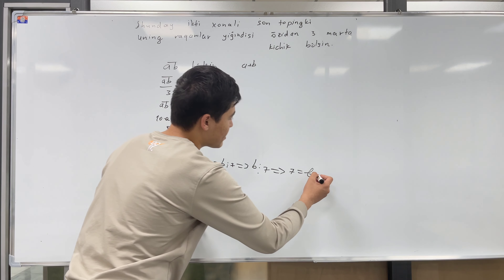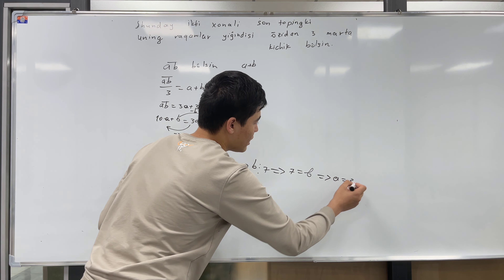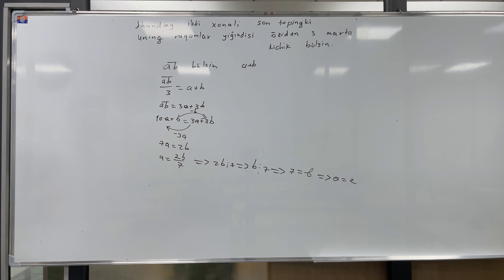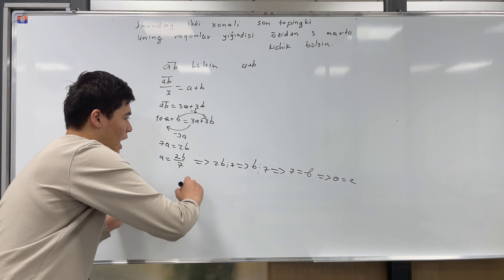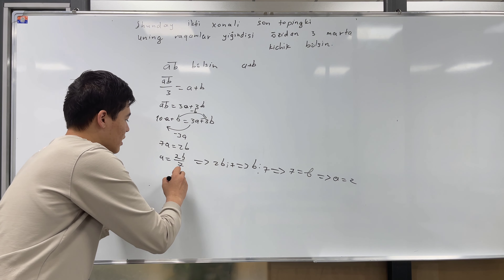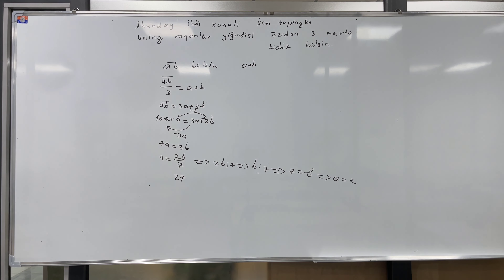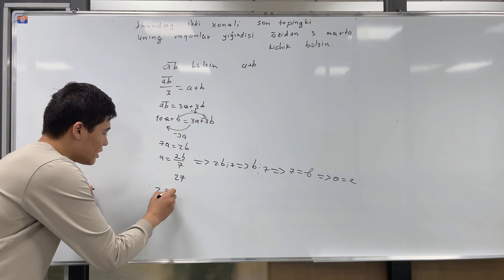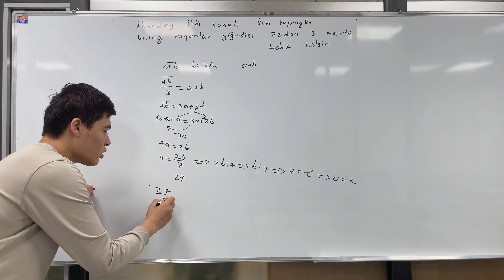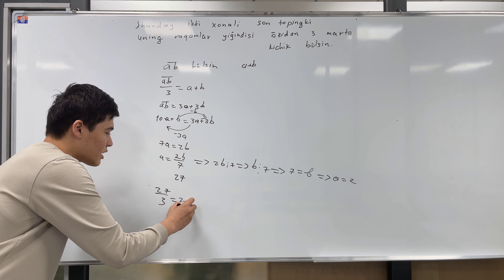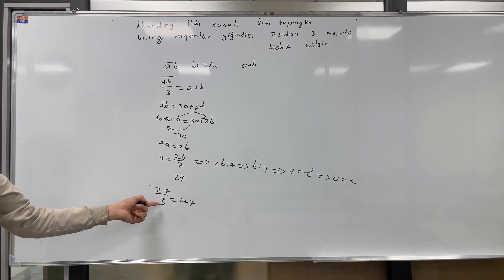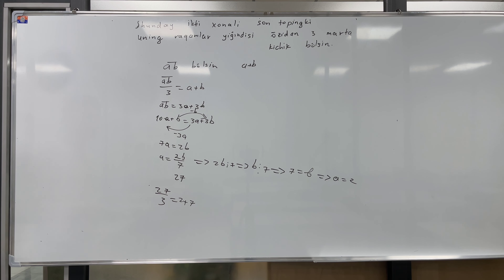This is 2. We have a 2. We have a last one. This is 8, this is 27. This is 7. Now we have only one question. So we have 27 plus 3, and we have 2 plus 7. 27 plus 3 is 9, and 27 plus 8 is 9. So we have 27 plus 8, so we have 27 plus 7.